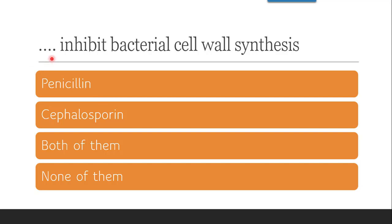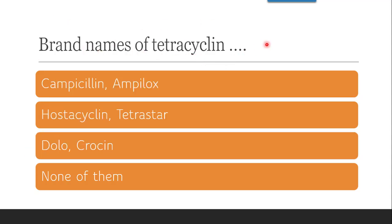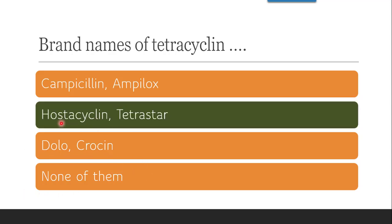The next question is: which antibiotic inhibits bacterial cell wall synthesis? Beta-lactam antibiotics inhibit cell wall synthesis, and because cell wall synthesis is inhibited, bacterial survival is not possible. The correct answer includes both penicillin and cephalosporin, which together form beta-lactam antibiotics. The next question is: brand names of tetracycline are — Campicillin/Ampilox, Hostacycline, Tetrastar, or Dolocrocin? The correct answer is Hostacycline and Tetrastar.